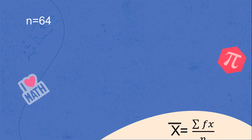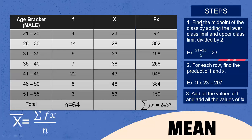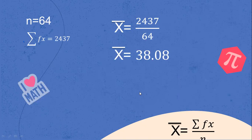The processes are just very easy. To summarize: find the midpoint by adding the lower and upper class limits divided by 2; for each row find the product of F and X; then add all the F values and all the FX values to get the summation of FX and N; and finally substitute into the formula: mean equals summation of FX over N, which is 2,437 divided by 64, giving 38.08.